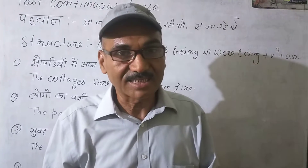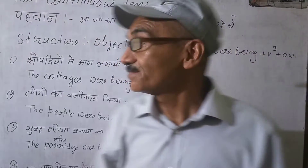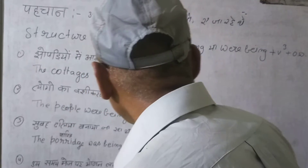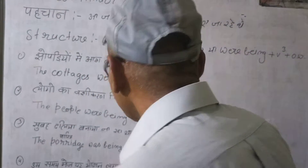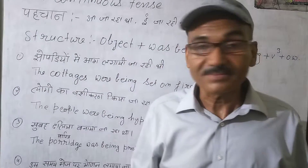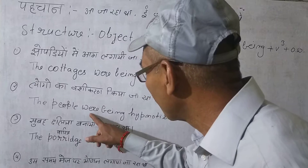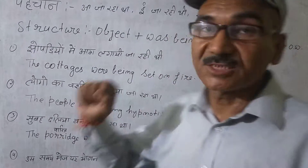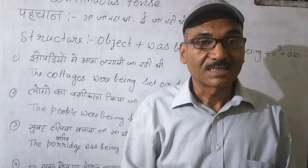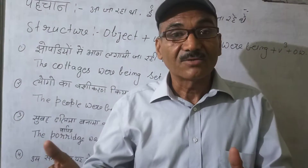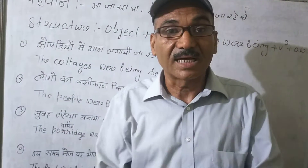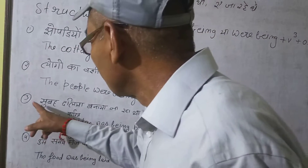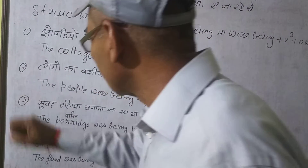Look, the second example: 'लोगों का वशीकरण किया जा रहा था।' English: 'The people were being hypnotized.' 'Hypnotized' means वशीकरण करना — hypnosis means वशीकरण। Okay, look at the third example.